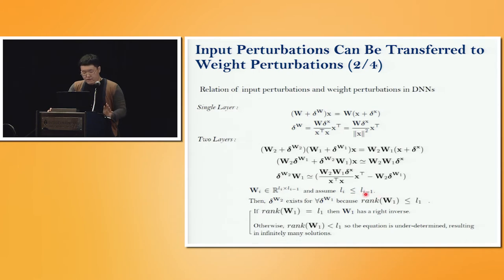Then, rank of this matrix is constrained by L1 and delta W2 always exists, which means we can always find equivalent weight perturbations with respect to input perturbations.